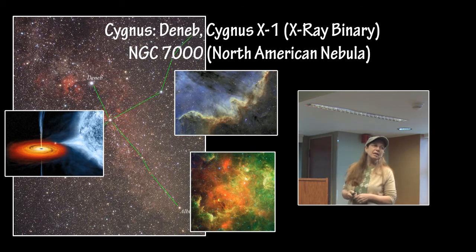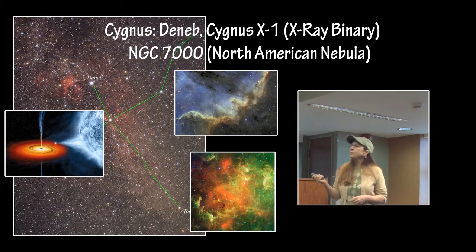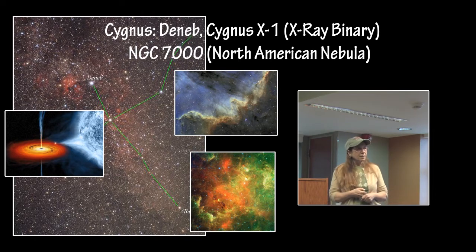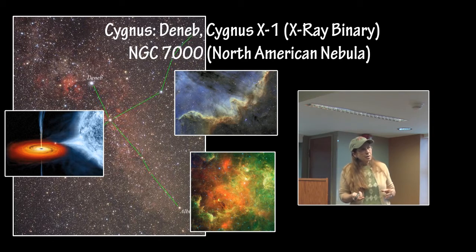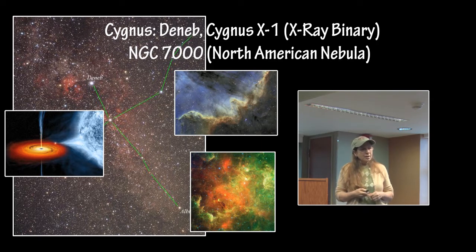Over here are two different images of the North American Nebula to give you an idea of how different something can look if it is taken from a different wavelength or through different filters, or if it is just colorized due to the energies within one bandwidth within the image.